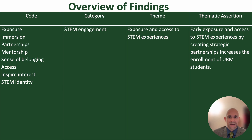Early exposure and access to STEM, by creating strategic partnerships, increases the enrollment of URM students. The category of STEM engagement informs this theme. Early exposure and access allow URM students to explore their interests, develop essential skills, and build confidence in their abilities. Providing URM students with opportunities to engage in STEM activities early in recruitment strategies will help foster STEM identity and increase URM interest in STEM residential high schools.